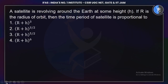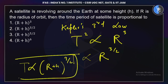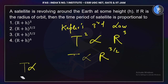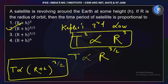A satellite is revolving around the Earth at some height H. If R is the radius of the orbit, then by Kepler's third law, the time period T of the satellite is proportional to (R + H)^(3/2). So the second option is correct. This follows directly from Kepler's third law.